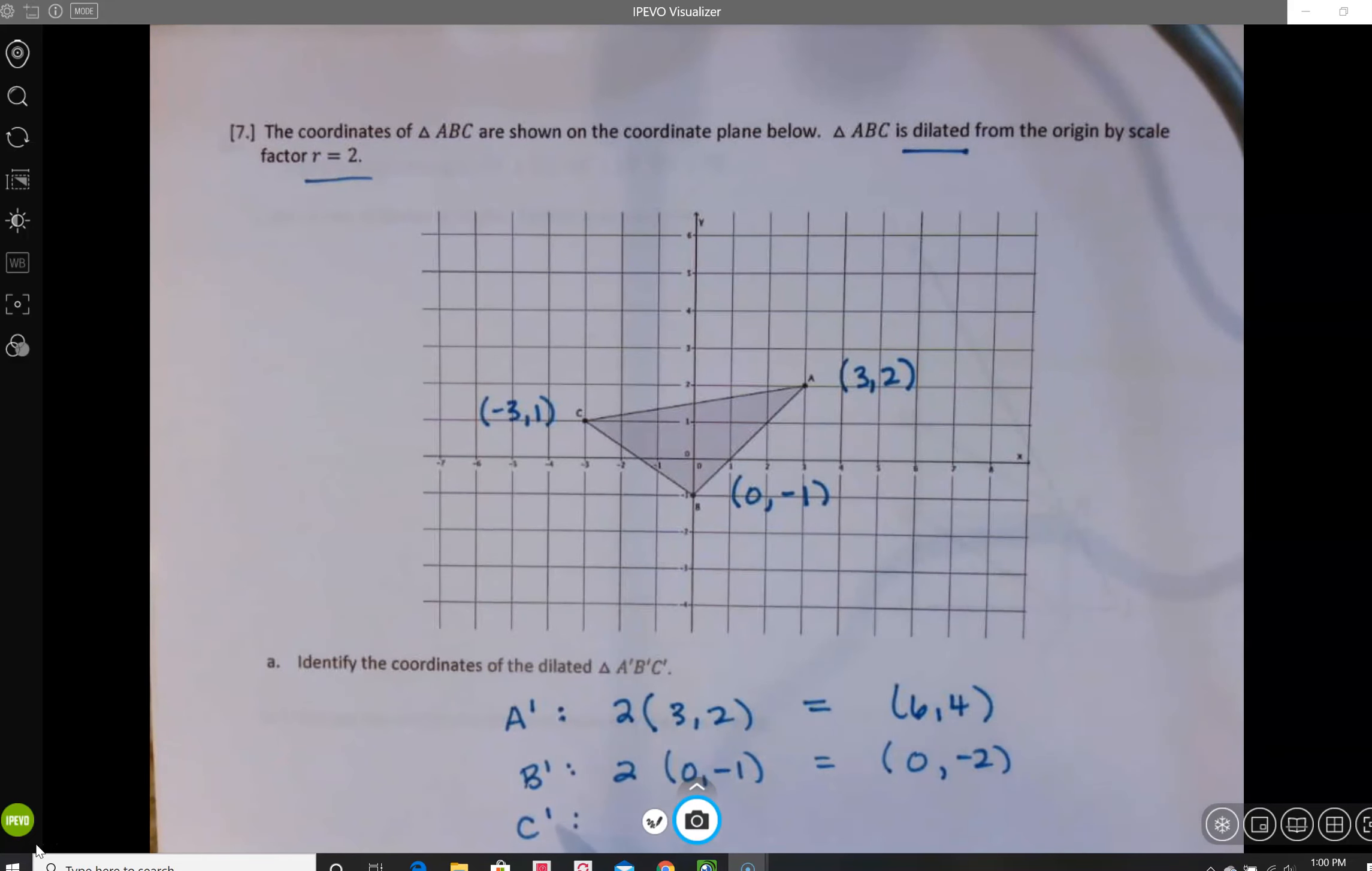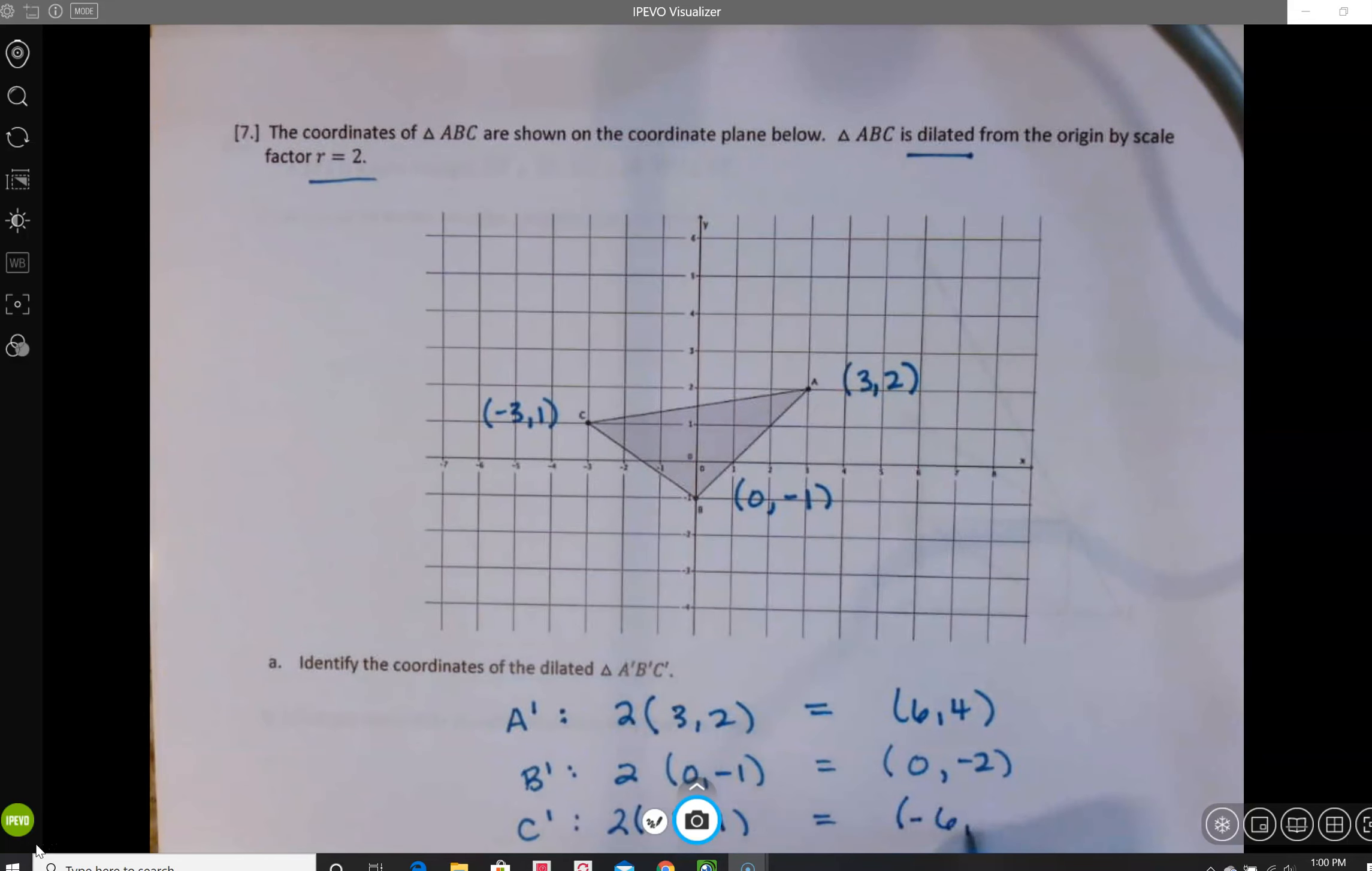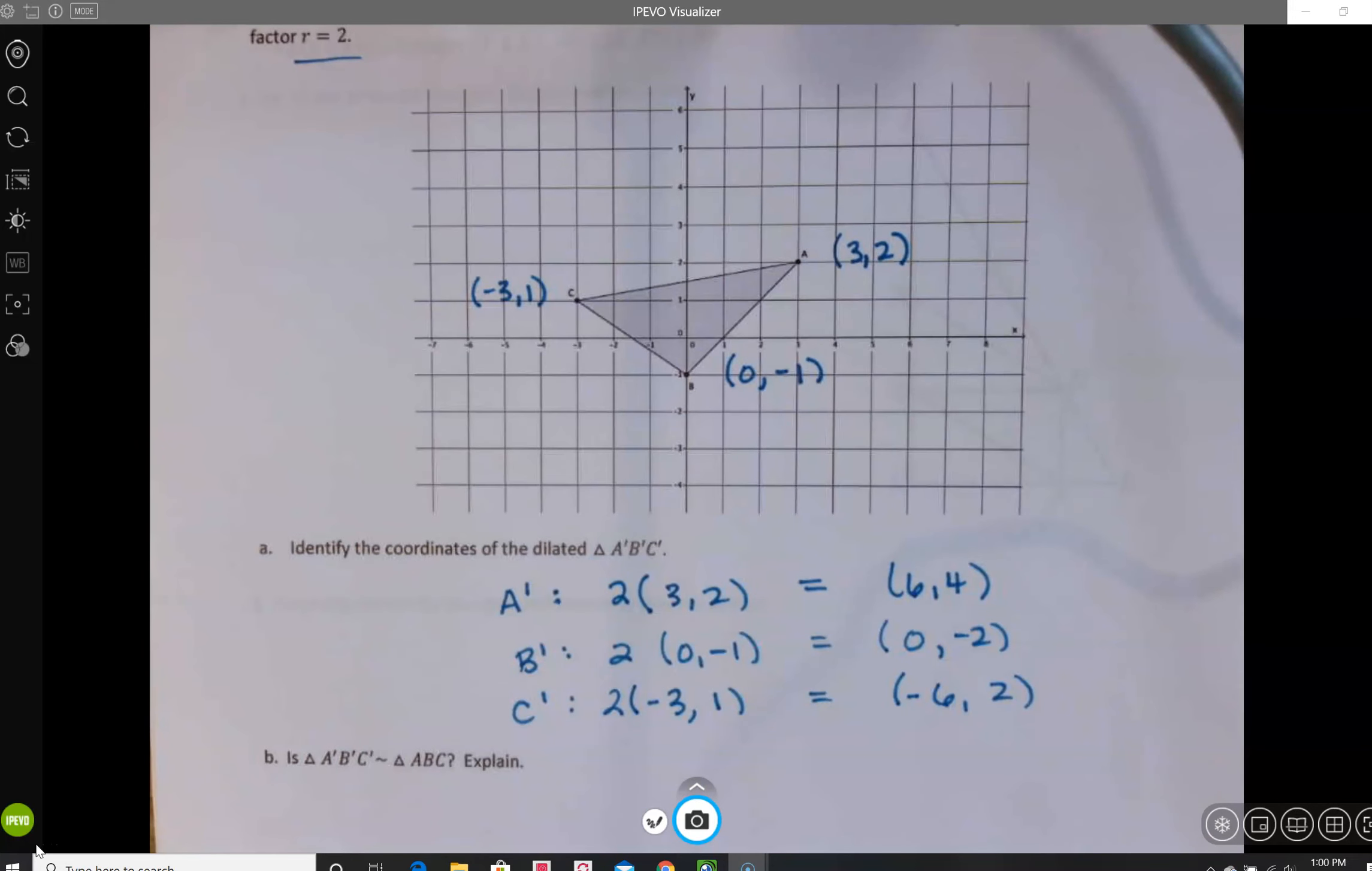To get C prime, we're going to take 2 times negative 3 comma 1, which gives negative 6 comma 2. So these are the coordinates of A prime, B prime, C prime.